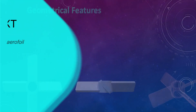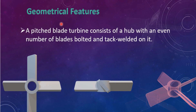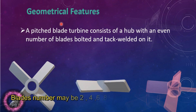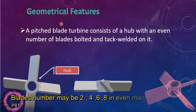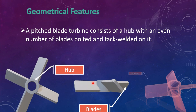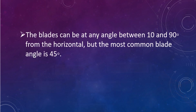Let's see some geometrical features of a pitched blade turbine. A pitched blade turbine consists of a hub with an even number of blades, bolted and tack welded on it. Here we can see there is a hub and the blades. The blade can be at any angle between 10 and 90 degrees from the horizontal, but the most common blade angle is 45 degrees.